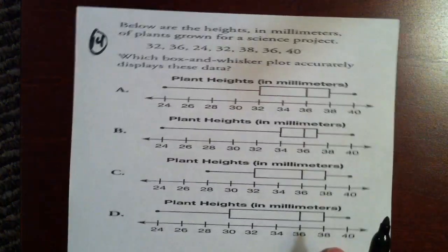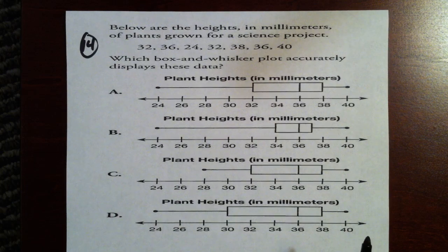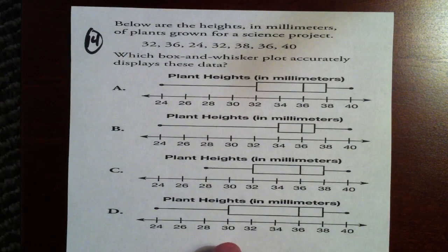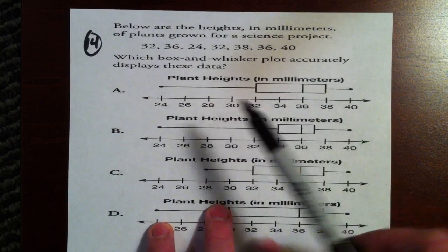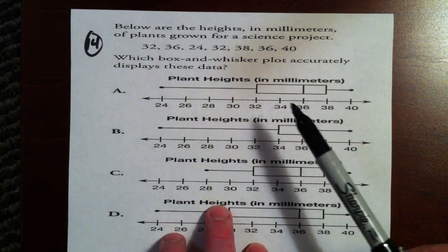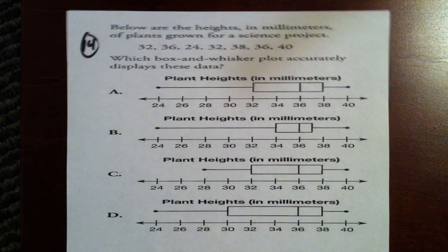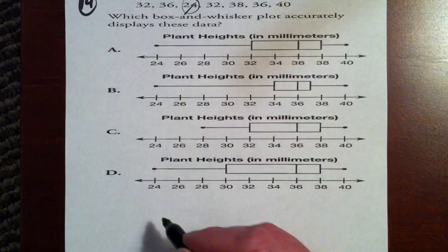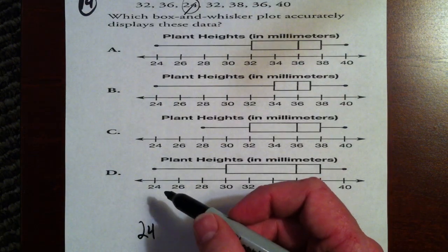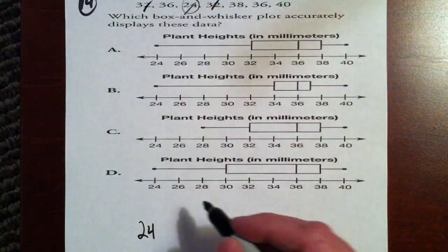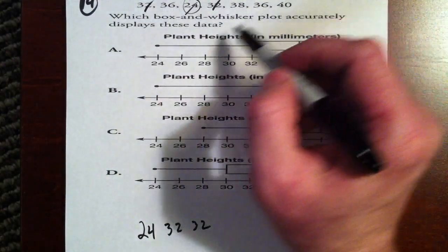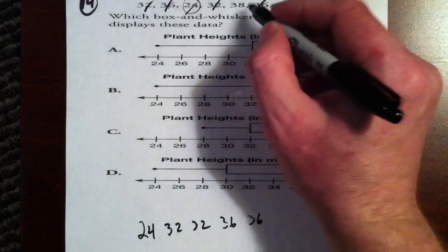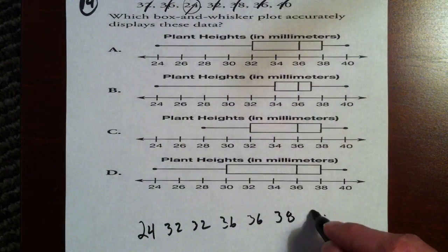Moving on to number 14. We're going on to box and whisker plots here. Below are the heights, in millimeters, of plant growth for a science project. So apparently they had a science project here, and some plants grew a lot, some plants grew a little, and so on. 32 millimeters, 36, 24, and so on. Which box and whisker plot accurately displays these data? Well, just about any time we're dealing with a set of data, we need to put those guys in order from least to greatest. The smallest number here is 24. So let's write that down. Next is 32, and we've got that twice. Next is 36. I've got another 36. Then I've got a 38, and then I've got a 40.